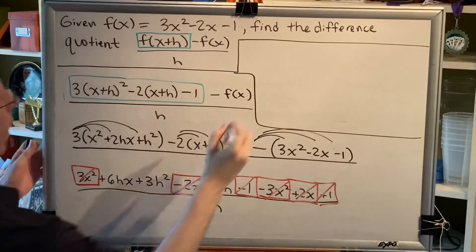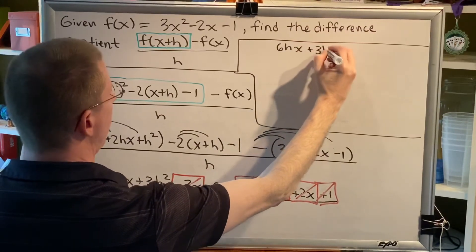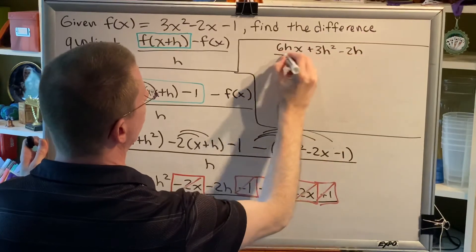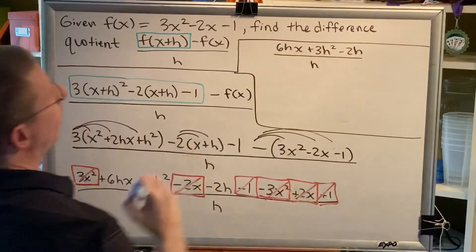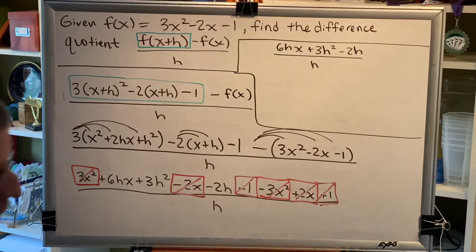What do we have left over? Well, we have 6hx plus 3h squared minus 2h, all divided by h. When a numerator contains multiple terms, but a denominator has only one term, we can perform the division by dividing each term of the numerator by the denominator.